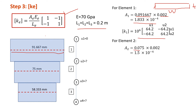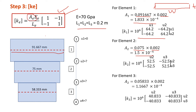For element 2, the width is 75mm and the thickness is 2mm, giving us the cross-sectional area for element 2. We then calculate the stiffness matrix K2 using the same equation — the only difference is the A value. For element 3, the width is 58.333mm and the thickness is 2mm. We obtain the cross-sectional area and determine the stiffness matrix K3.